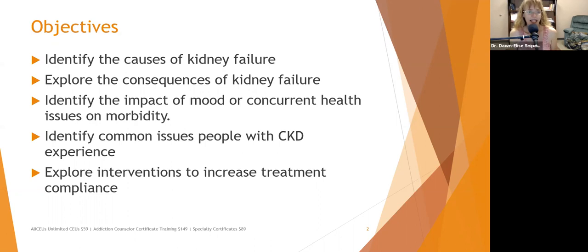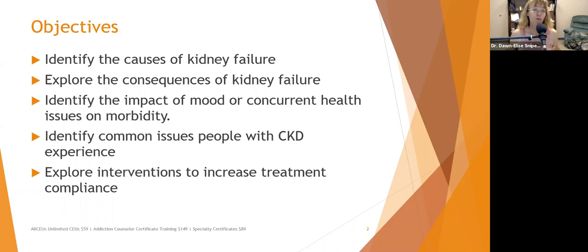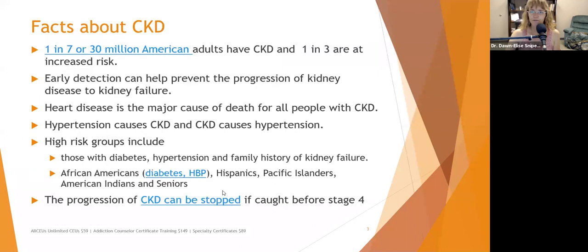A lot of us don't work in a setting where chronic kidney disease is the primary presenting issue. As you will learn, it's a lot more common than you might think. As clinicians, we may be interacting with people who have chronic kidney disease that hasn't progressed to dialysis or transplant, but is a chronic condition they're dealing with. One in seven — 30 million American adults — have chronic kidney disease, and one in three are at increased risk. If there are 21 people in a staff meeting, three of them may have chronic kidney disease.